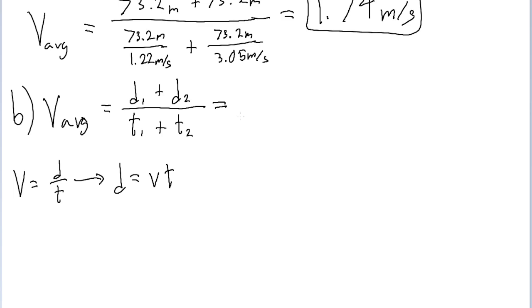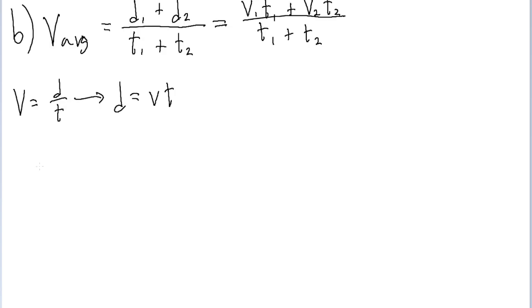So, the way we can rewrite our average velocity equation is, instead of d sub 1, we can write v sub 1 times t sub 1 plus, and then instead of d sub 2, we write v sub 2 times t sub 2, and divide this by the sum of the times. So, to sub in our values, v average is equal to 1.22 meters per second. But the time is 1 minute, but to keep our units consistent, I'm going to write that as 60 seconds, so the seconds will cancel out because of the units being consistent.